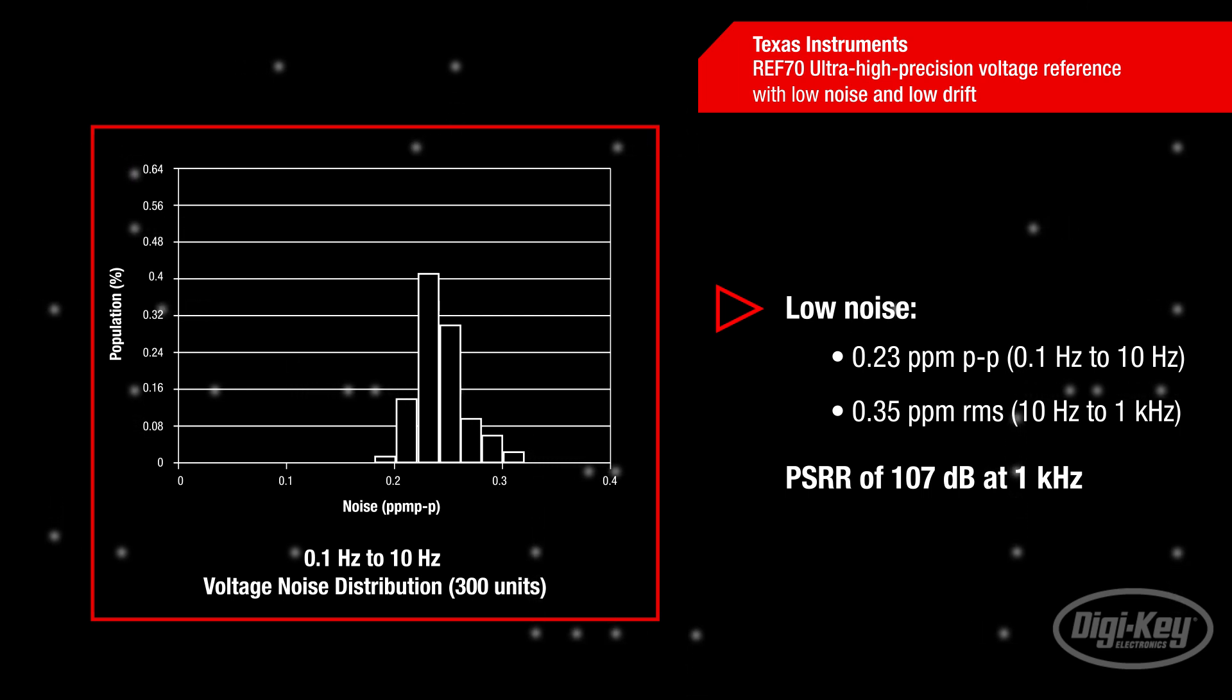The power supply rejection ratio of 107 decibels at 1 kilohertz means that the REF70 family is flexible enough for a wide range of applications.